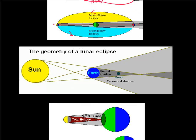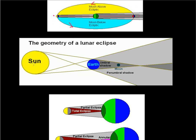In terms of the geometry, to get a lunar eclipse we have to get the sun, the earth, and the moon in a sun-earth-moon alignment — not sun-moon-earth, because that way we get a solar eclipse. To get a total lunar eclipse, the moon has to move fully into the earth's umbra. This is the darkest part of the shadow — no light gets in this section at all.